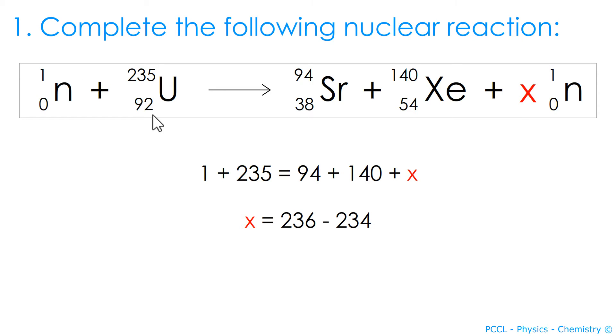It is necessary to apply the rule of conservation of the number of nucleons. So, here, you are expressing 1 plus 235 which must be equal to the number of nucleons on the right, which leads us to find that X is equal to 2. First degree equation with one unknown. Easy.